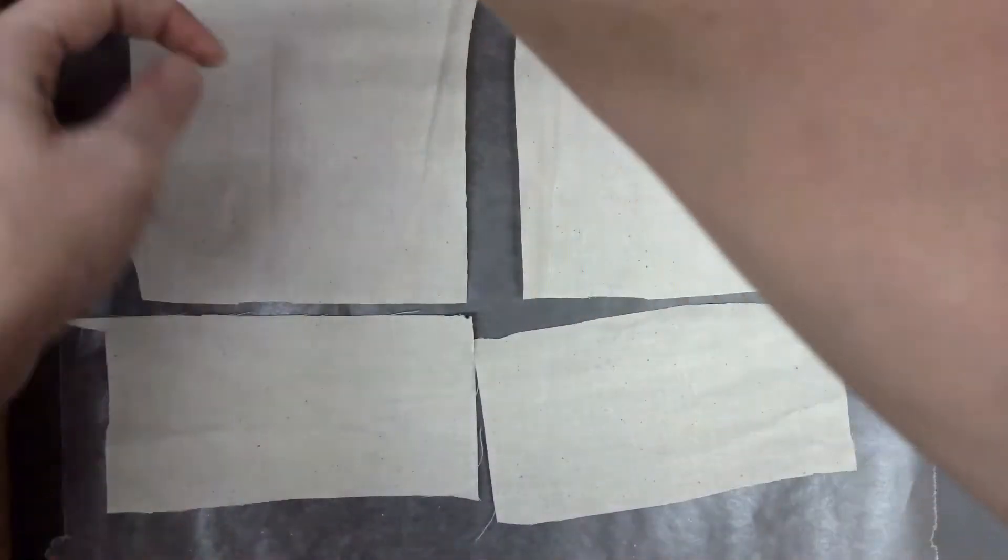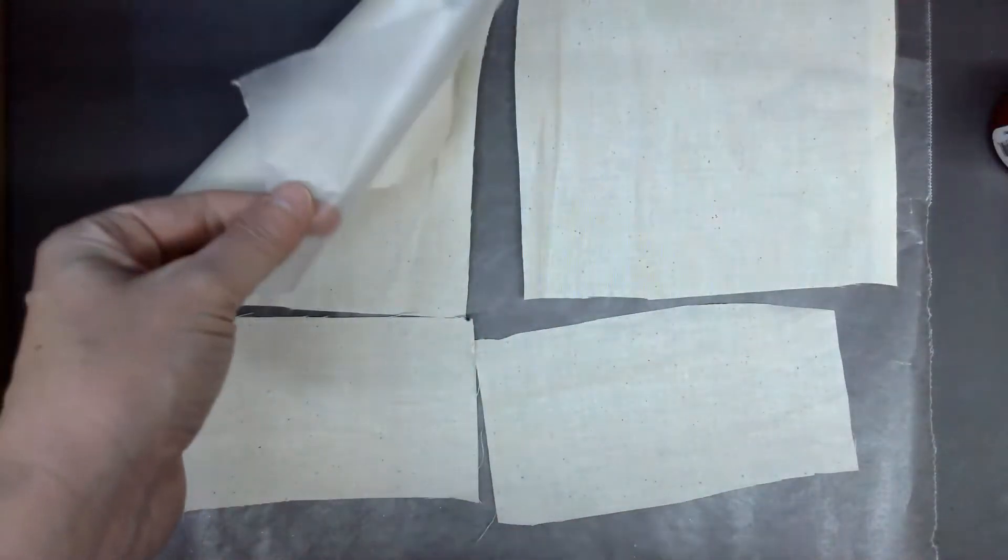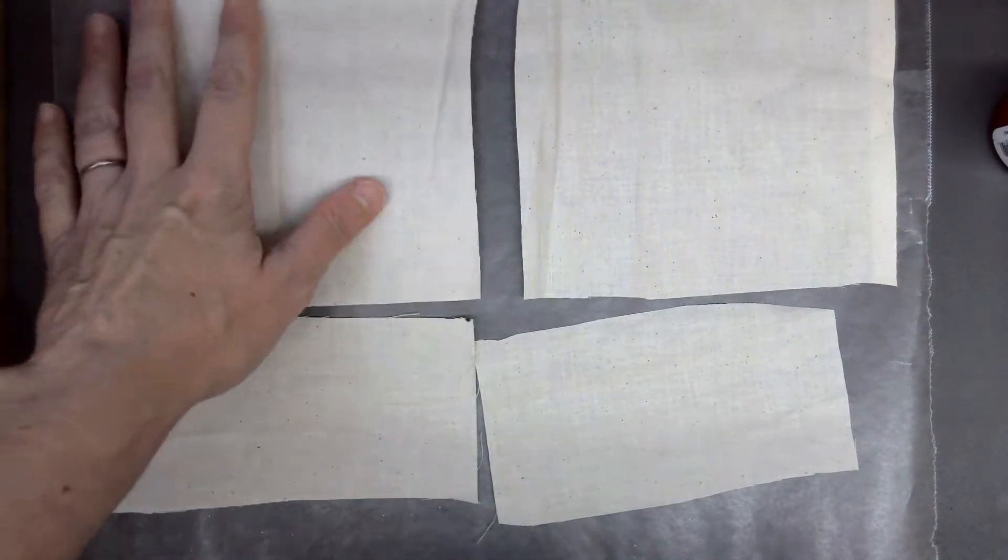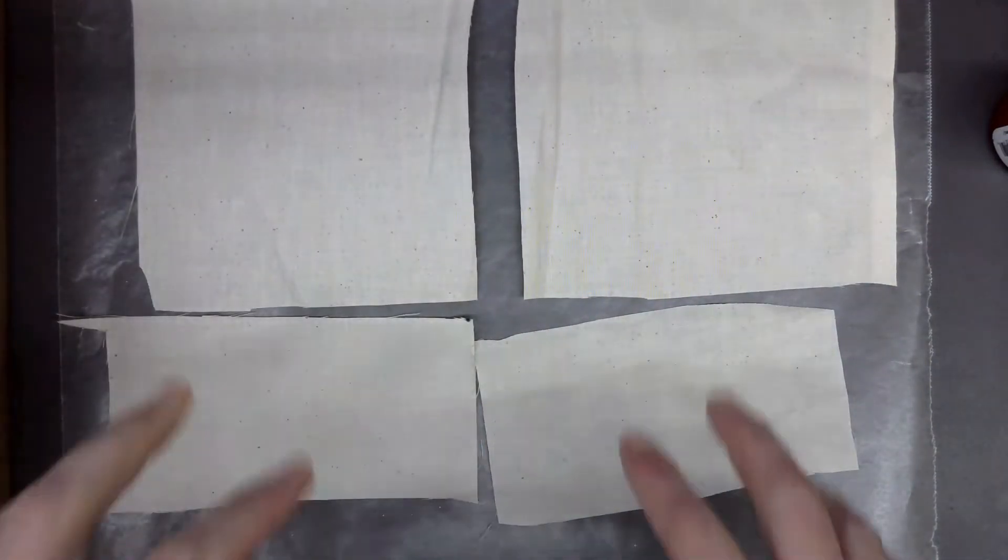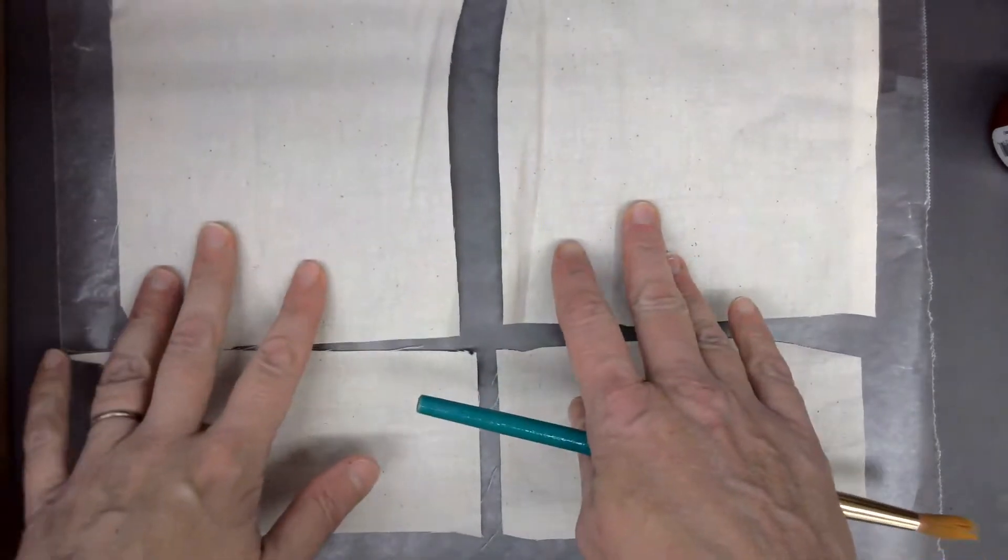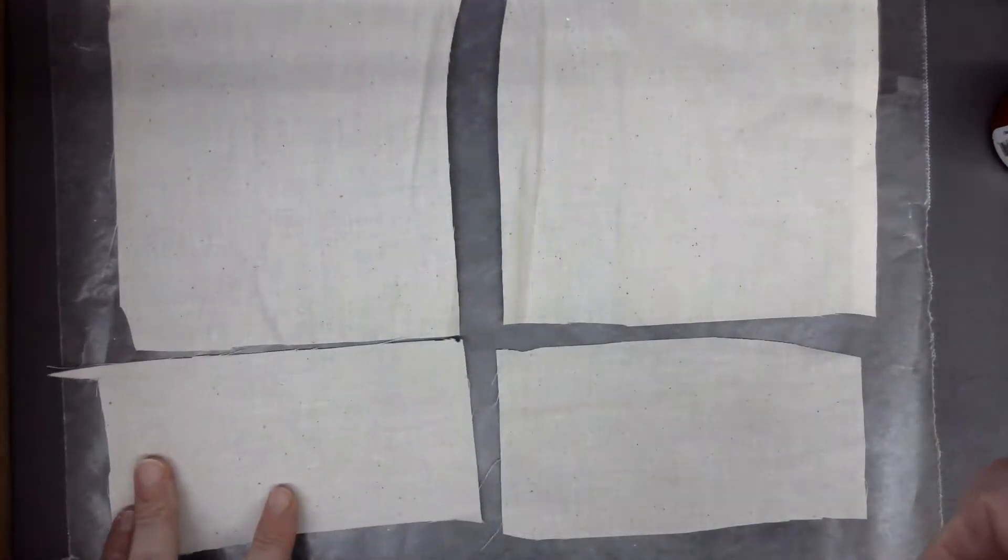You're going to use wax paper. So I have wax paper. You want to put this on your tray, and this is just so that your fabric won't stick to the tray or to the table, but it will just peel off the wax paper.